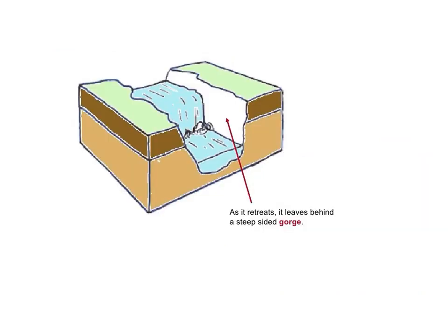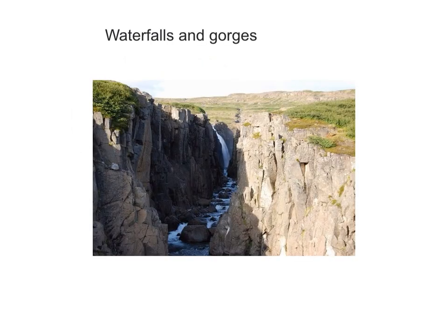So the retreating waterfall backwards through the river valley creates a steep-sided river valley, and this is the gorge. This is a diagram version, and here we can see a classic photograph of a very steep-sided gorge.